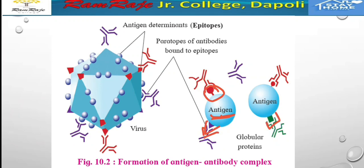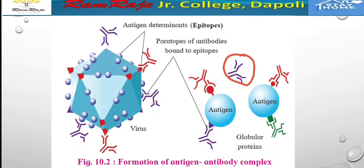The antigen structure can change — for example, represented by different shapes like squares, triangles, and circles in diagrams. The epitope is the antigen structure and the paratope is the antibody structure.